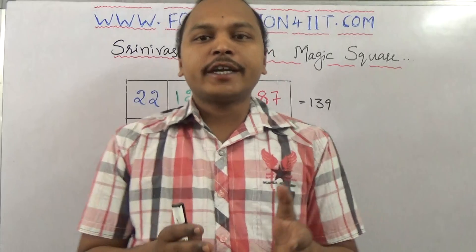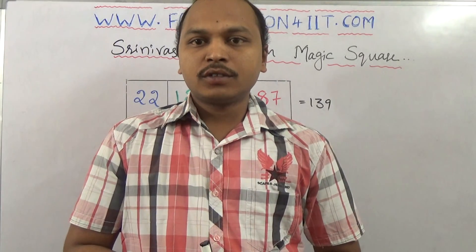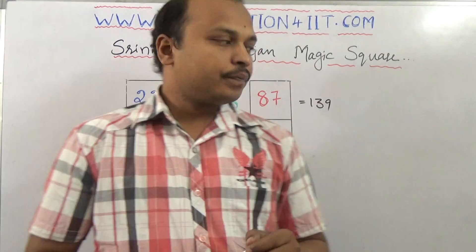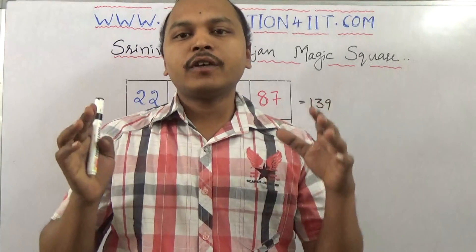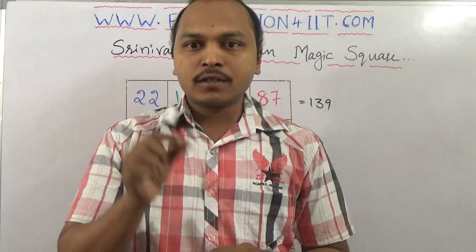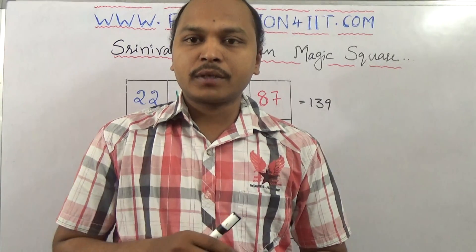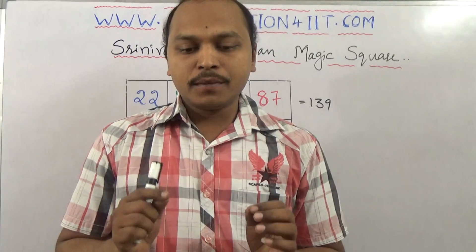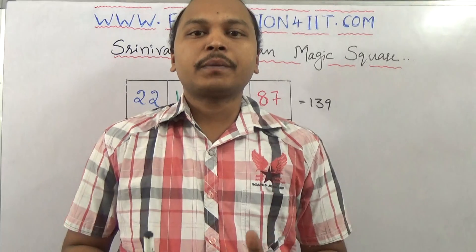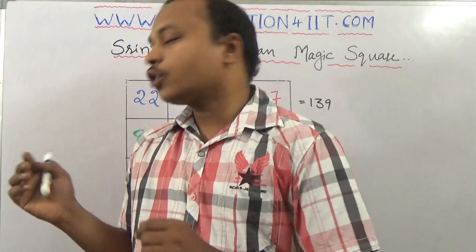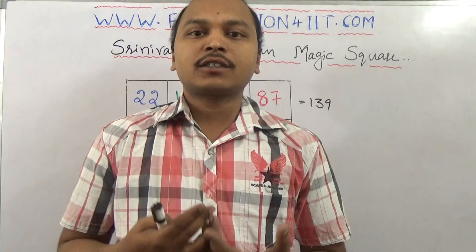Now, with your own date of birth, how you can prepare a magic square. Your date of birth will come on the top row and the remaining will become the numbers. If you add the total sum in all the ways — four rows, four columns, diagonals, corners, and center four numbers — you will get the same sum equal to your date of birth. So how you need to prepare that, I will tell you.